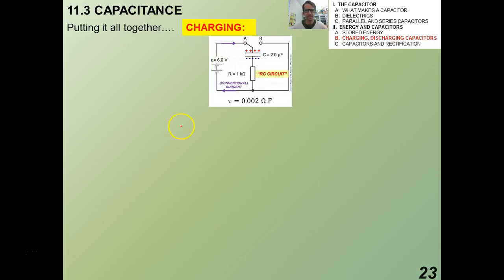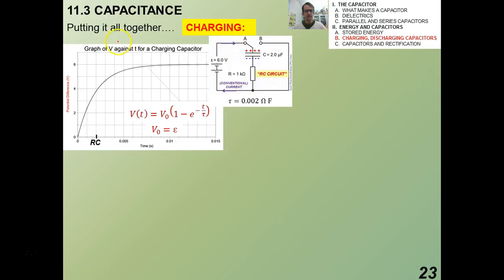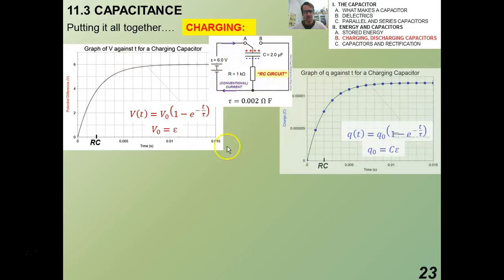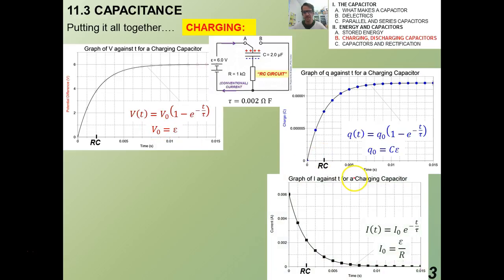Now, this negative sign is actually important, and you read in some textbooks where you can essentially ignore the negative sign. We're going to kind of halfway ignore it, and I'll show you what I mean a little bit later. All right, so I put it all together. Charging, it's the same circuit. If it's charging, the graph of V of T against T is going to look like this. The graph of Q of T against T is going to look like this. With the following values for V naught and Q naught.